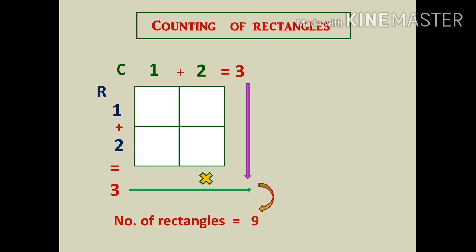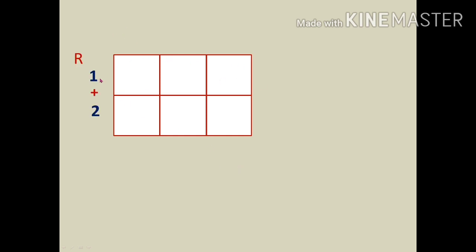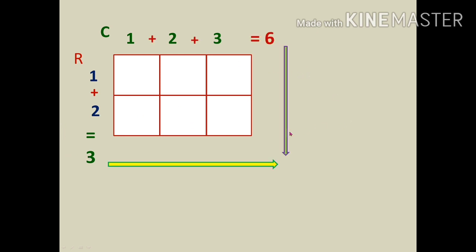Let's see another image. Write the row numbers in the series, add them: 1 + 2 = 3. Write the column numbers in the series: 1, 2, 3, so adding gives 6. Multiply 6 and 3: the answer is 18. The total number of rectangles in this image is 18.